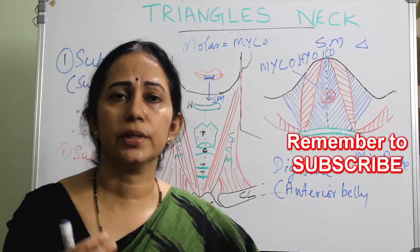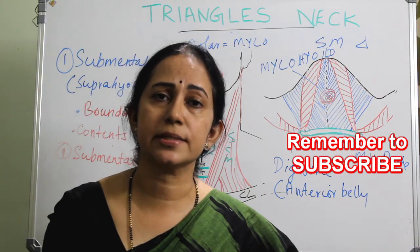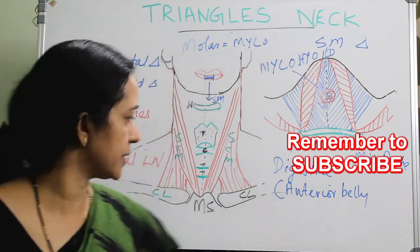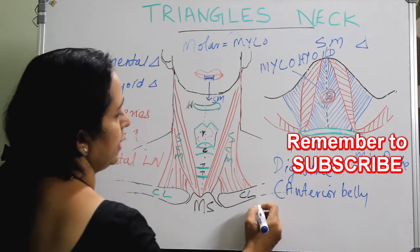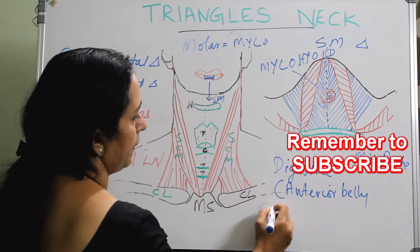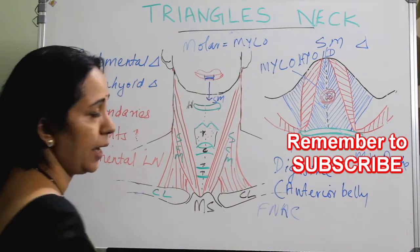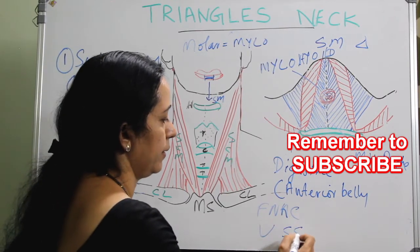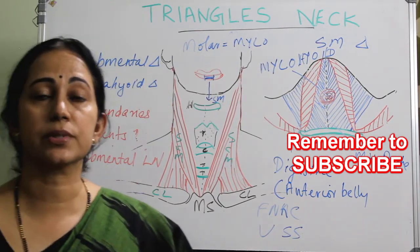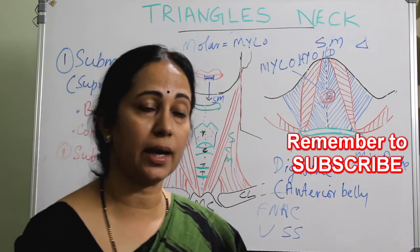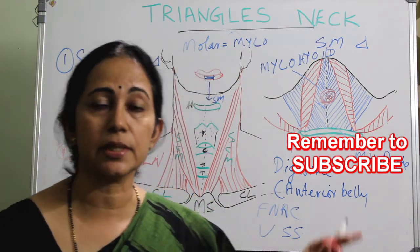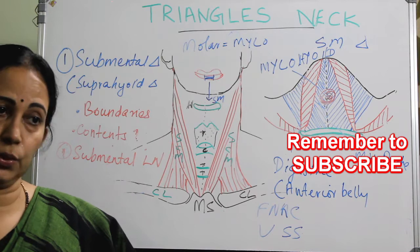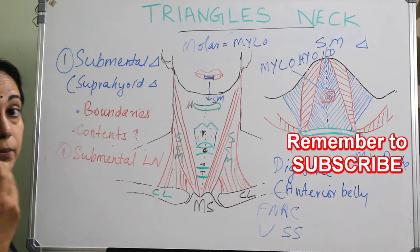The investigation of choice for an enlarged submental lymph node is fine needle aspiration cytology (FNAC). The second investigation is an ultrasound scan, because type B ultrasound scan has high sensitivity and specificity in the case of the submental lymph node.